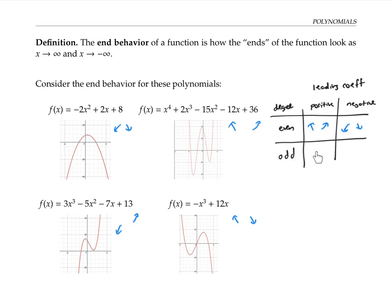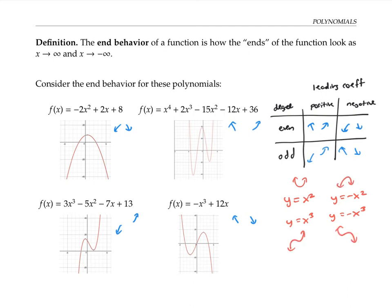When the degree is odd and the leading coefficient is positive — like degree three with leading coefficient three — we have that sort of end behavior falling left and rising right. And when the degree is odd and the leading coefficient is negative, we have the opposite end behavior. I like to remember this chart by thinking of the simple examples: y equals x squared, y equals negative x squared, y equals x cubed, and y equals negative x cubed. Any polynomial with an even degree and positive leading coefficient has the same end behavior as x squared, and similarly for the other three cases.